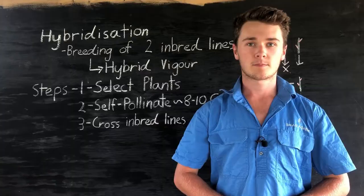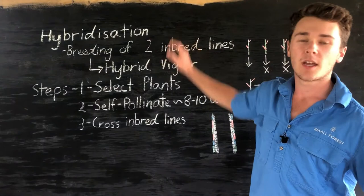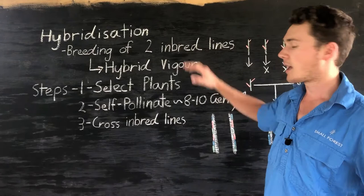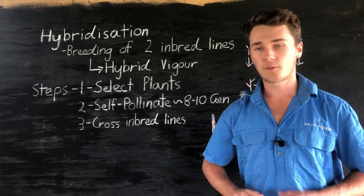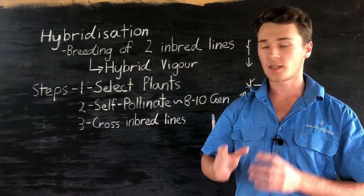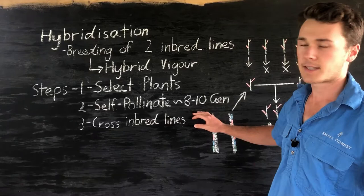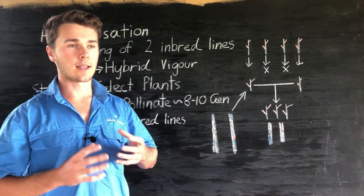Our next plant breeding method is hybridization. Hybridization is quite simple — it's just the breeding of two inbred lines. As a result we get a hybrid vigor offspring, meaning we get characteristics from both parents. To do this, first we select plants that already have the desired trait. Then we allow them to self-pollinate for about eight to ten generations. This is important because it allows lethal recessive genes to pair up and that plant will die — so in the end we only have plants with pure lines.